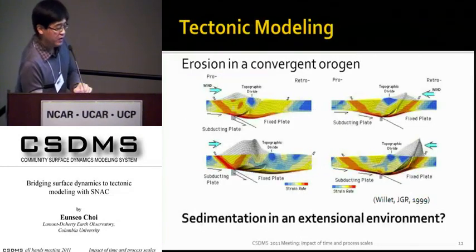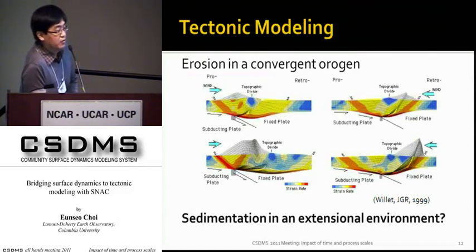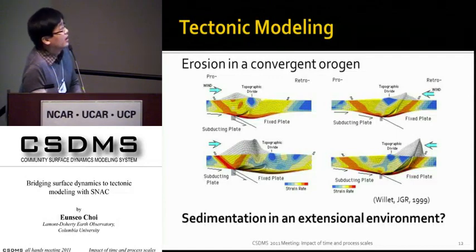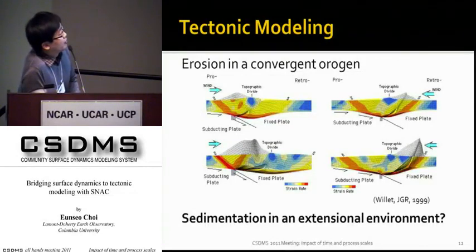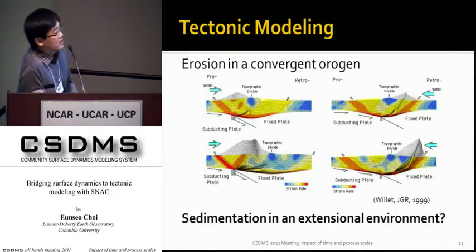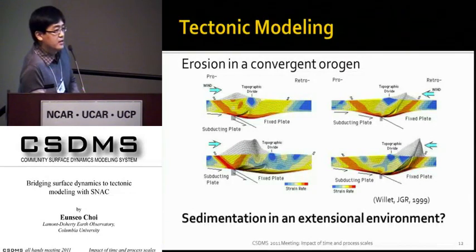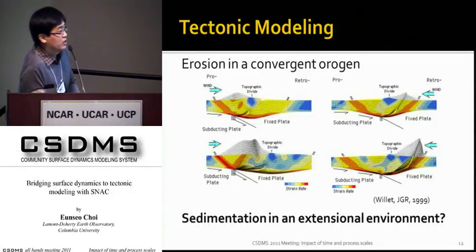Now let's move on to the more important issue of how tectonic and surface processes interact with each other. Erosion in a convergent orogen is now an iconic problem demonstrating how those two processes interact in a non-trivial way. This picture from a paper by Willett (GRL 99) shows that pro- or retro-wedge erosion can lead to completely different patterns of exhumation. Assuming you are all familiar with this type of interaction, I chose a couple of projects in the opposite setting — extensional tectonics rather than compressional, and sedimentation rather than erosion as the process that adds complexity.